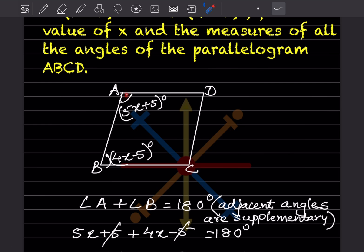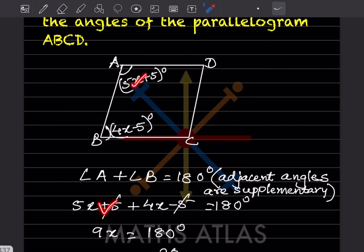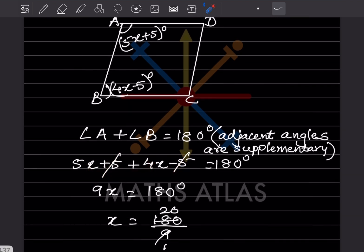These two angles are given. We can say angle A plus angle B equals 180 degrees because they are adjacent angles — adjacent angles are supplementary, meaning they add to 180 degrees. So 5x + 5 + 4x - 5 = 180, giving us 9x = 180.